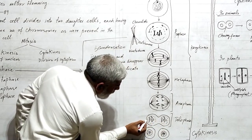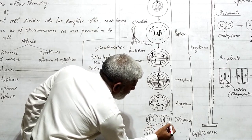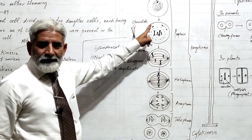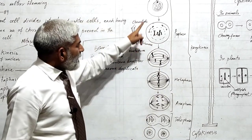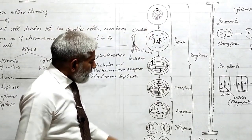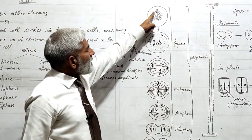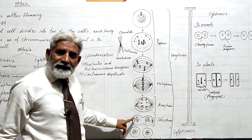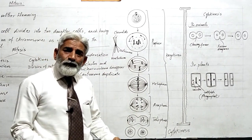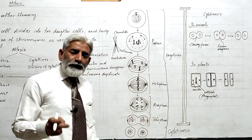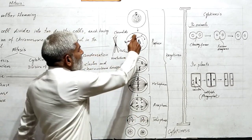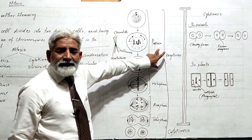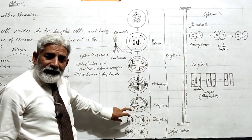The spindle fibers disappear. This is a reversal of prophase — in prophase the nuclear membrane was stripped away, the nucleolus disappeared, and spindle fibers formed. Here the spindle fibers disappear and chromosomes uncoil. Ultimately two nuclei are formed, and karyokinesis — the division of the nucleus — is completed.